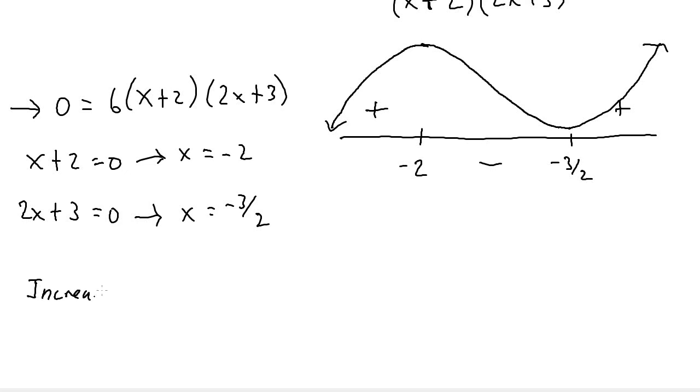So for where the function is increasing, we can say that it's positive, or the derivative is positive, from negative infinity to negative 2, and from negative 3 halves to infinity. Because we know that when the derivative is positive, the function is increasing. So I can write negative infinity to negative 2. I need the union sign, and negative 3 halves to infinity.